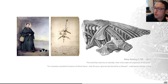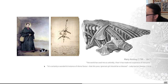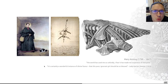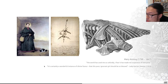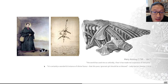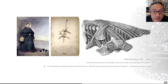A fine example is the quote: 'It is certainly a wonderful instance of divine favour that this poor, ignorant girl should be so blessed,' said a lady in society at the same time. And I think Mary Anning's own quote — 'The world has used me so unkindly, I fear it has made me suspicious of everyone' — is actually really quite well founded. Society was really poor to Mary Anning.